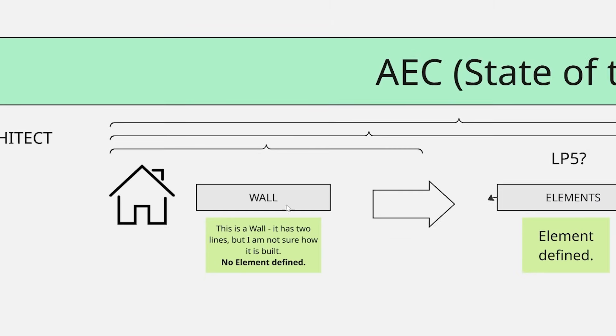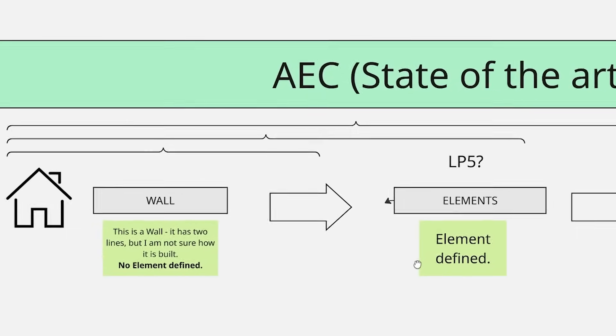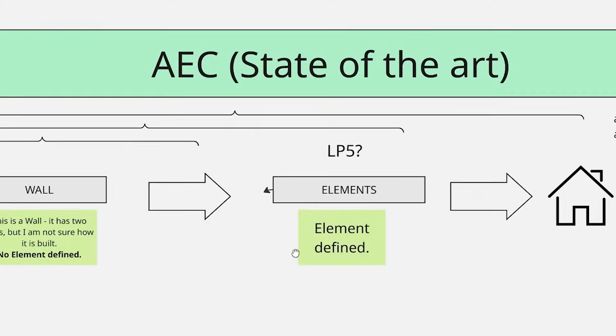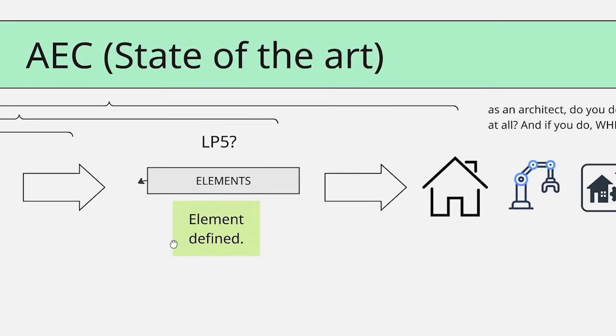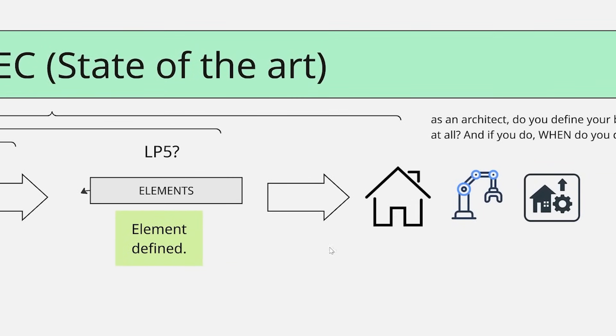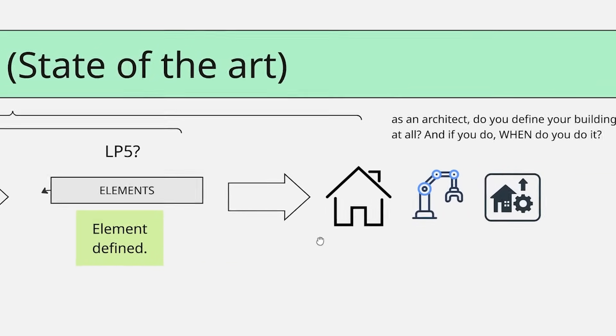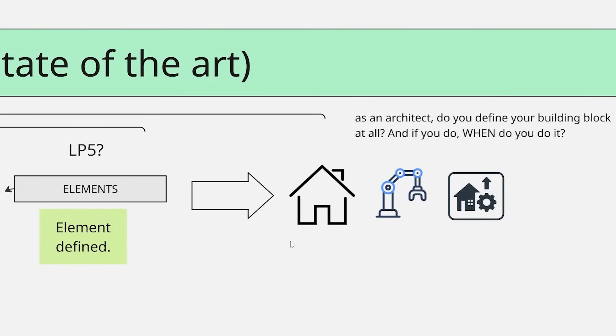Then we come to what in Germany and Austria is called Leistungsphase Fünf — phase five of the project — where we have to define more or less the digital twin, whether in 2D or not, and define the details of how it's built. At that point we do have our elements if we're dealing with an assembled prefabricated object, and we can continue to automate from there and talk about automated assembly.